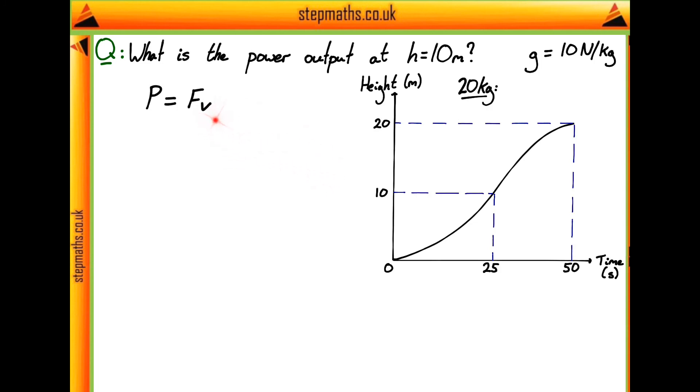First, let's think about the velocity that our mass is moving at at a height of 10 meters. What actually is velocity? It's distance divided by time. If we look at our graph, we have height on the y-axis and time on the x-axis. So the gradient of our graph is going to be distance divided by time, our height divided by time.